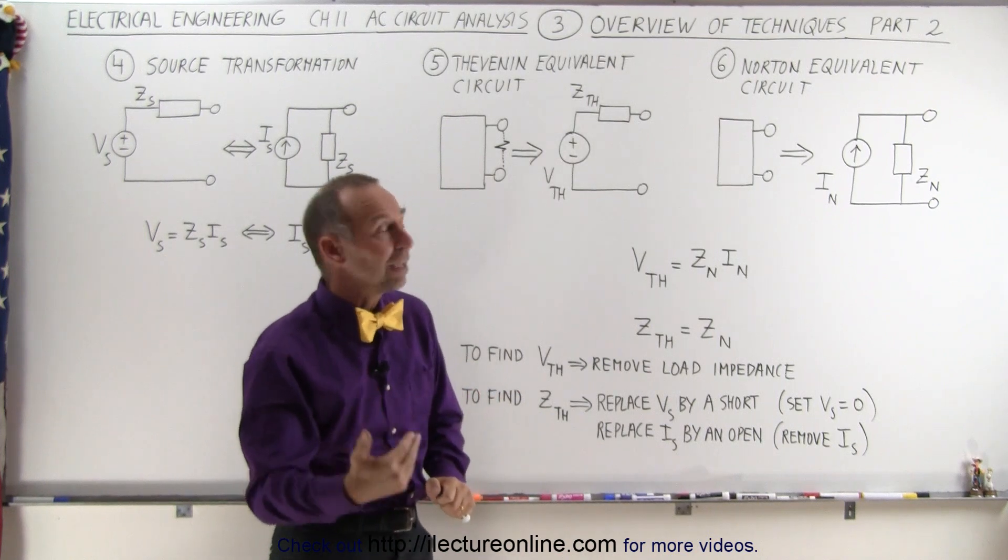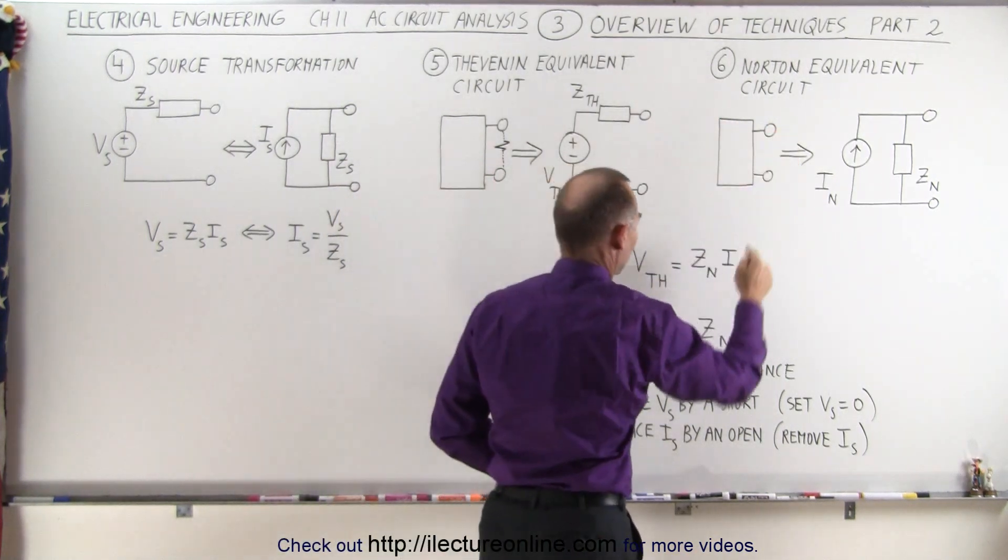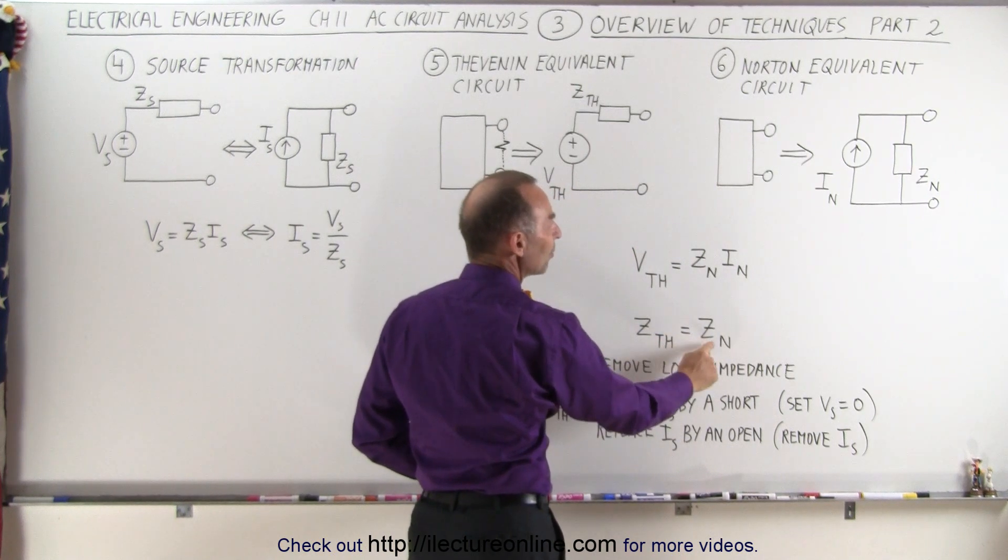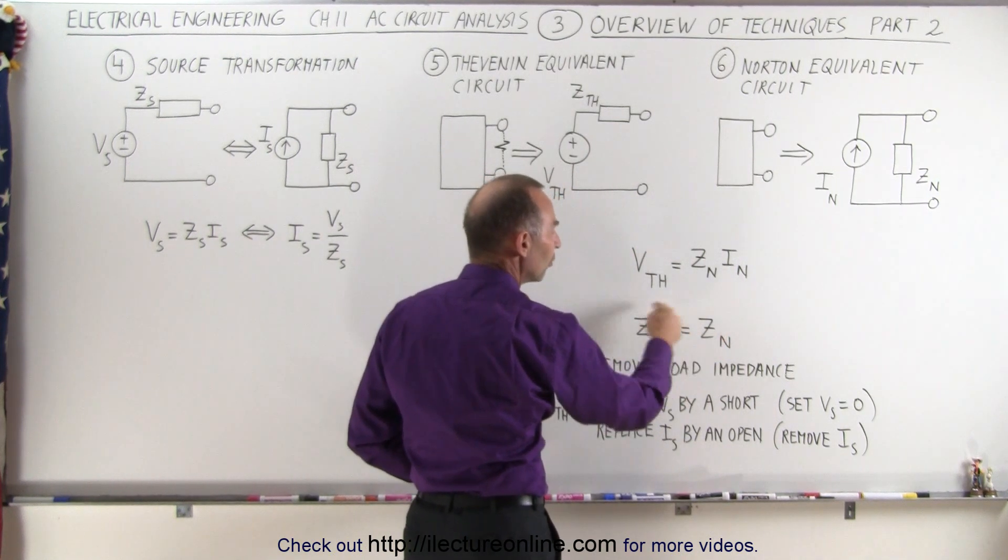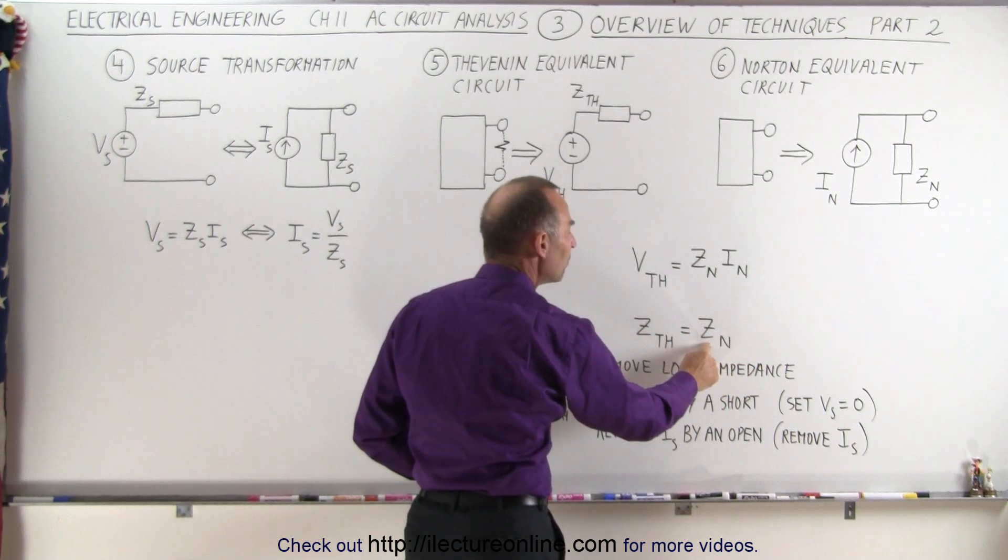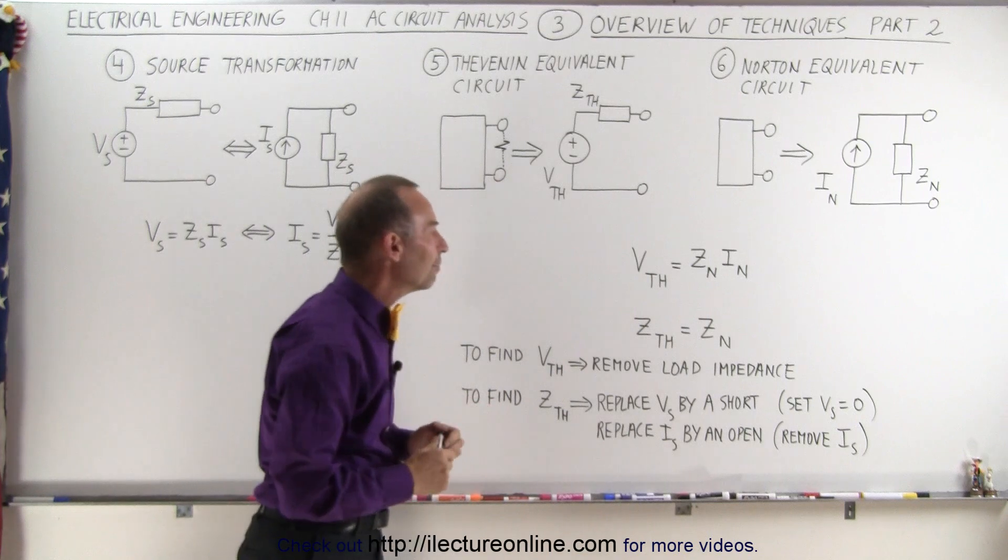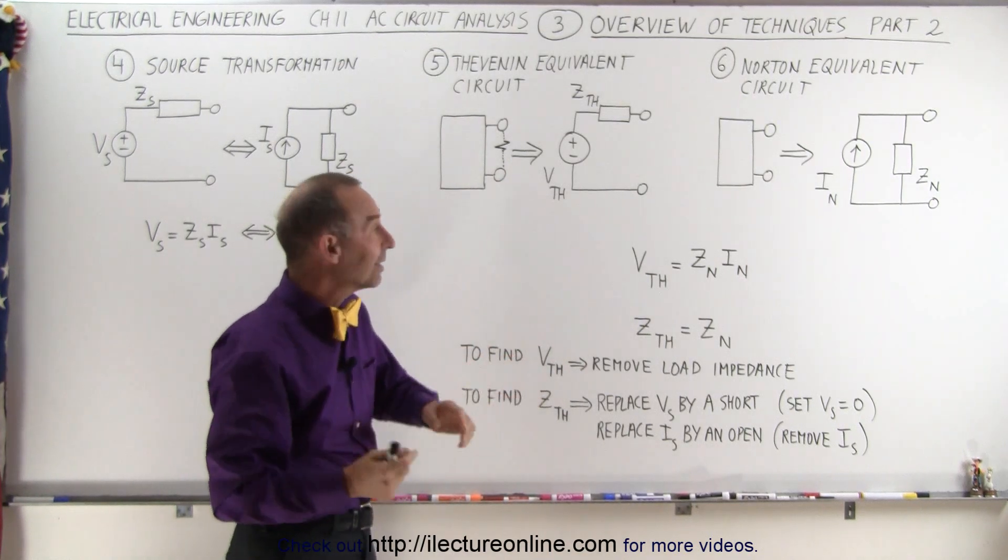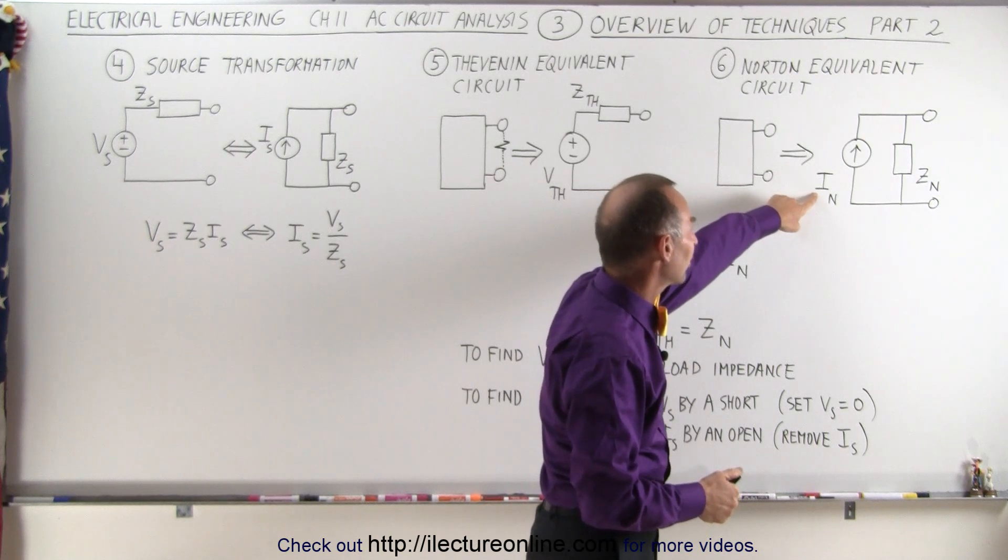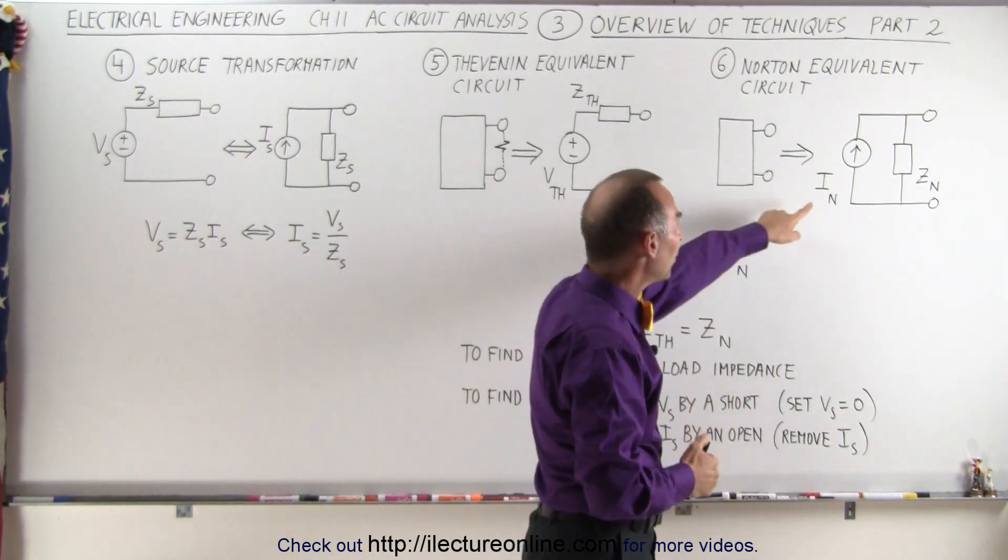Notice that in the case of using the Norton equivalent circuit, the Thévenin impedance is the same as the Norton impedance. So we use the very same method to find the Norton impedance as we did for the Thévenin impedance.